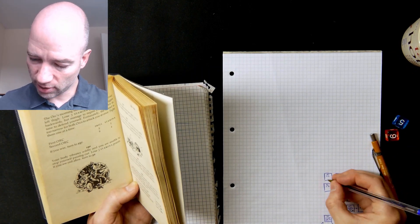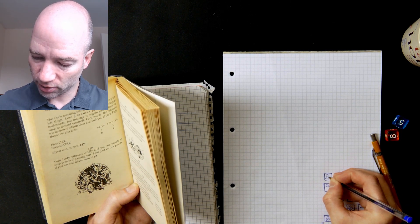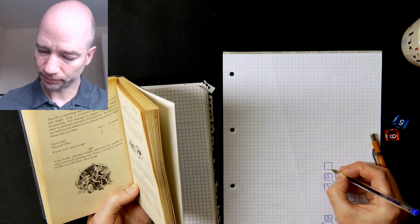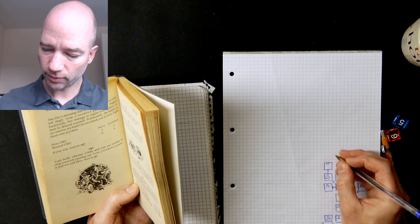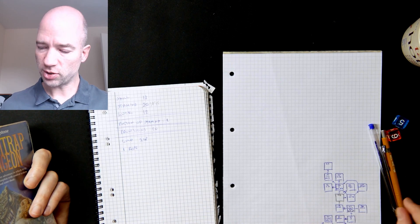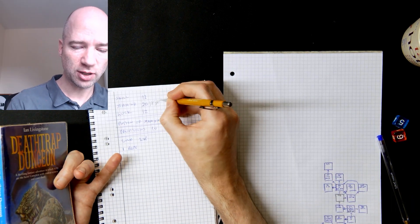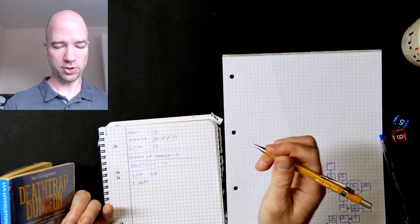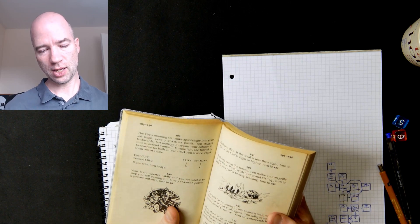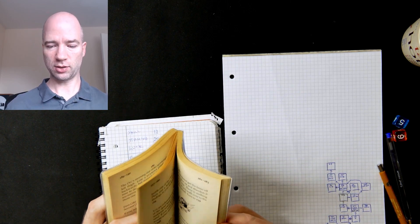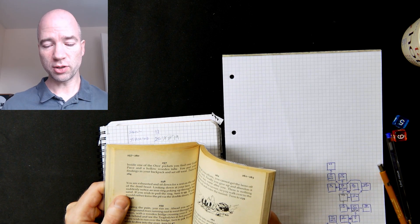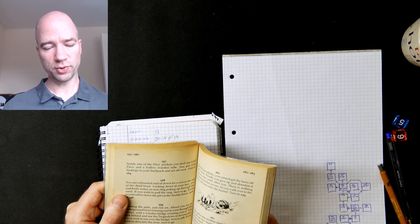So stamina minus 3, and then I'm going to eat a provision, so I'm up to gain 4 hit points and my provisions is down to 9. And I'm going to 257.